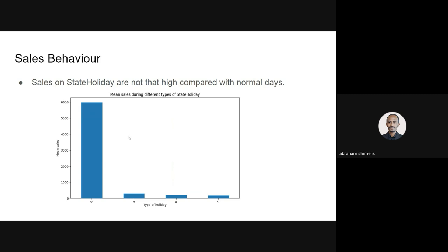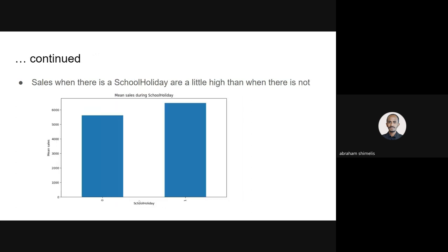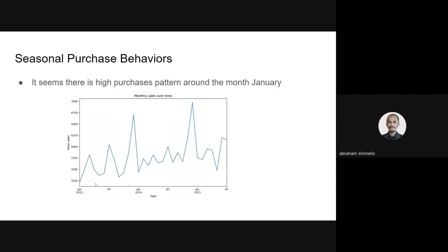These are the sales on state holidays. Zero represents none, so this means most sales are happening on non-holiday days. This shows school holidays as well. And this is a seasonal purchase behavior detected from the data. Near around the month of January, there was a spike in sales — maybe this is due to New Year or something.